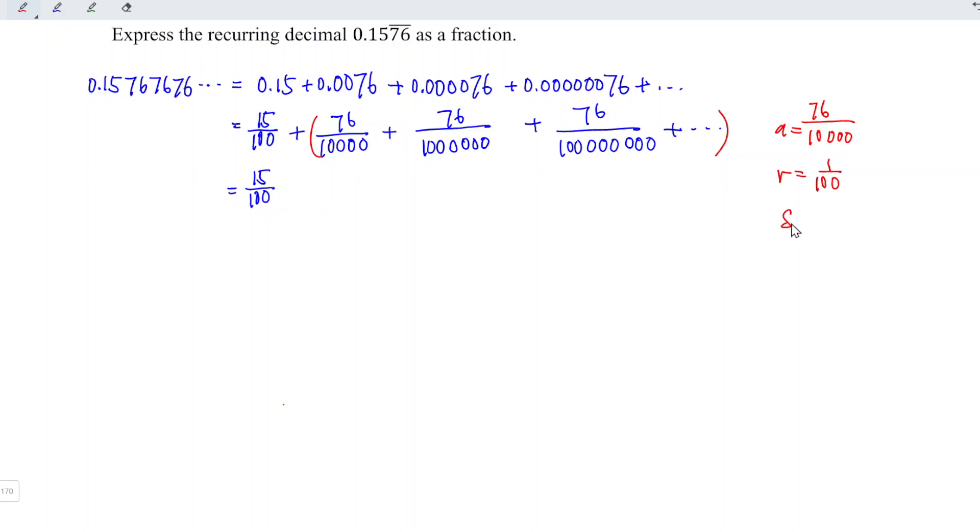Using the sum to infinity formula, we have A over 1 minus R. This is equal to 76 over 10,000 divided by 1 minus 1 over 100.